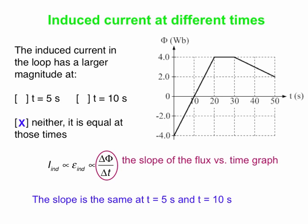At t equals 5 and t equals 10 seconds — in fact, the whole time between t equals 0 and t equals 20 seconds — the slope is constant. It's a straight line going from minus 4 at t equals 0 to plus 4 at t equals 20 seconds. So the induced current has the same magnitude the entire time — it's equal at t equals 5 and t equals 10. Don't be fooled by the flux passing through 0 at t equals 10; the actual value of the flux isn't relevant. What matters is how quickly the flux is changing, and it's changing just as quickly at t equals 5 as at t equals 10.